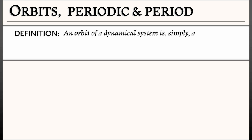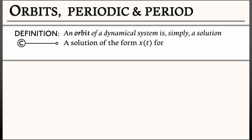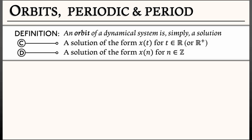An orbit of a dynamical system is simply a solution — a full solution over time. In continuous time, this means a solution of the form x(t) for all values of t, maybe all positive and negative reals, or just positive reals if you're looking at a forward orbit. In discrete time, same thing: a solution of the form x(n) for all values of n. That is an orbit of the dynamical system.